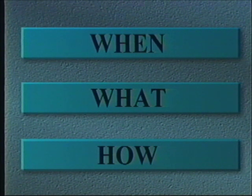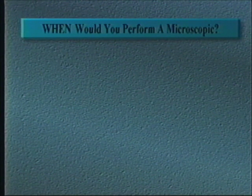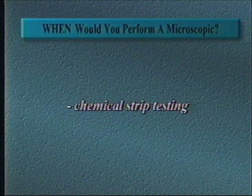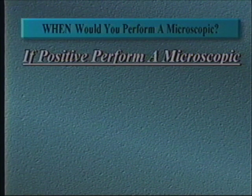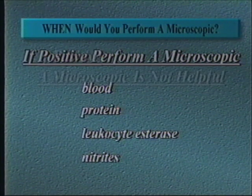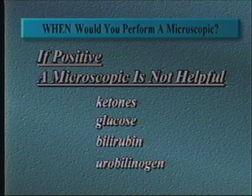In this video we are going to discuss the when, what, and how of performing urine microscopic examinations. The when of performing microscopics is an important issue in today's busy laboratory. Microscopics should be performed only on those urines that have been screened macroscopically. To properly screen macroscopically, a dipstick with all the chemical tests should be used. If the chemical testing is positive for blood, protein, leukocyte esterase, or nitrites, then a microscopic should be performed. If other chemicals such as ketones, glucose, bilirubin, or urobilinogen are positive without any of those others being positive, then a microscopic would not be appropriate. Of course, if a physician specifically insists on a urine microscopic, one should be performed.